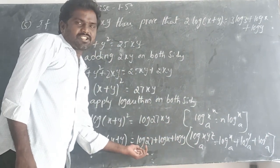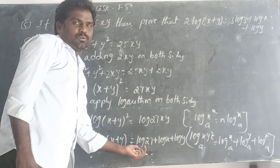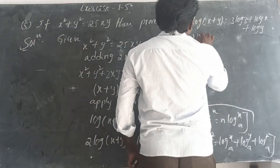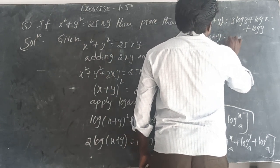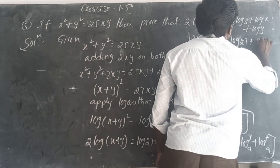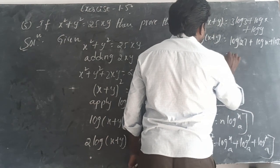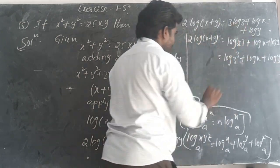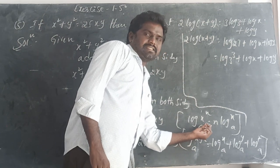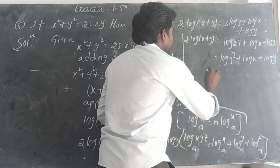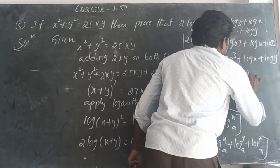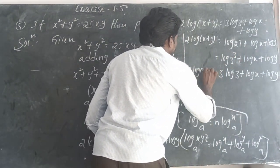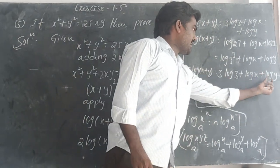27 can be written in prime form as 3 cubed (3×3×3=27). So 2 log(x+y) equals log 27 plus log x plus log y. We write log 27 as log 3 cubed, then applying the power formula, it becomes 3 log 3. Therefore, 2 log(x+y) equals 3 log 3 plus log x plus log y.